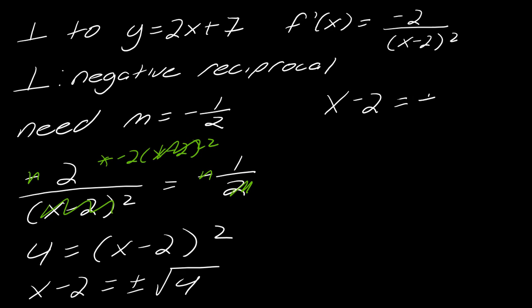Okay, so now I've got x minus 2 equals plus or minus 2. So I can break this up into x minus 2 equals 2. If I add 2 to each side, I get x equals 4. Or x minus 2 equals negative 2. And if I add 2 to each side, I get x equals 0.